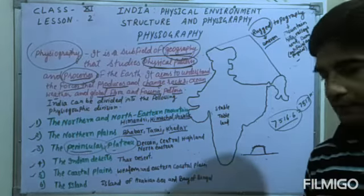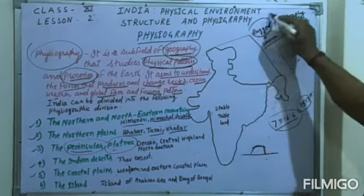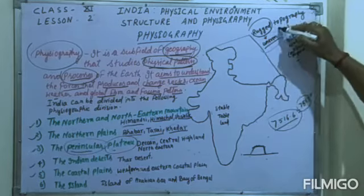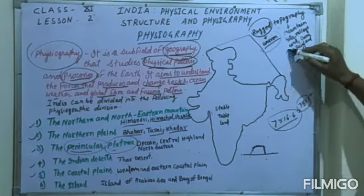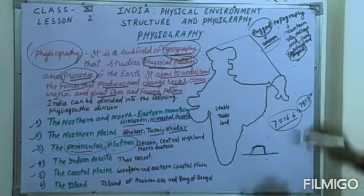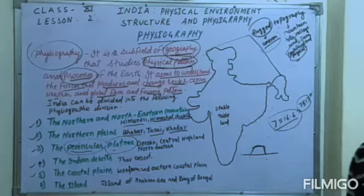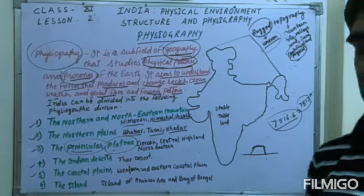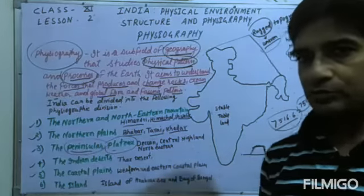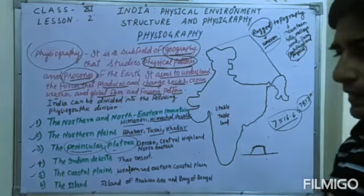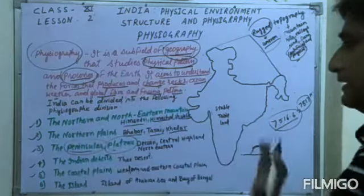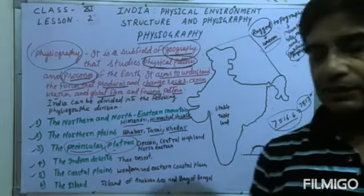An important term here is 'topography,' which refers to uneven land surface. There are two types: artificial topography, which includes roads, dams, and buildings; and natural or physical topography, which includes mountains, rivers, hills, and valleys. This completes the overview of the physiographic divisions of India, which together make the country very unique and diverse.